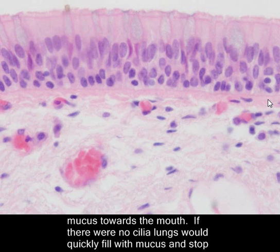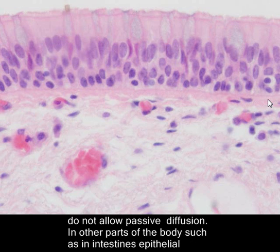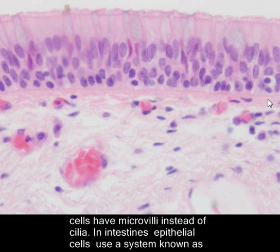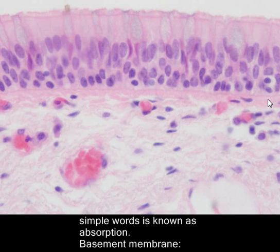If there were no cilia, the lungs would quickly fill with mucus and stop the exchange of gases. It is also important to note that columnar cells are quite thick and do not allow passive diffusion. In other parts of the body, such as the intestines, epithelial cells have microvilli instead of cilia, and use a system known as active transport to move nutrients from the intestines to venous blood — a process known as absorption.